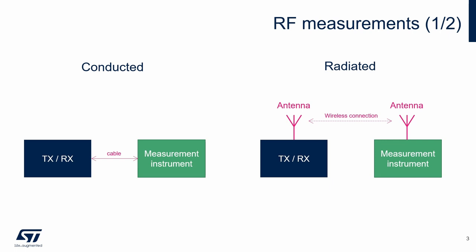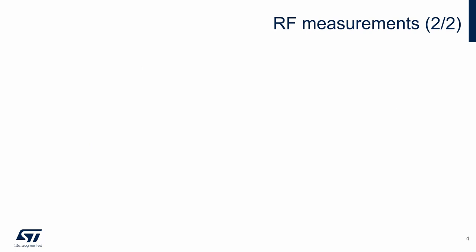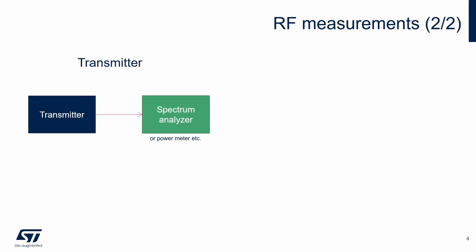Each group has its own typical use case. RF measurements can also be divided into transmitter and receiver measurements. In the case of transmitter measurements, the transmitter is connected to an instrument which measures the signal. It can be a spectrum analyzer, power meter, etc.